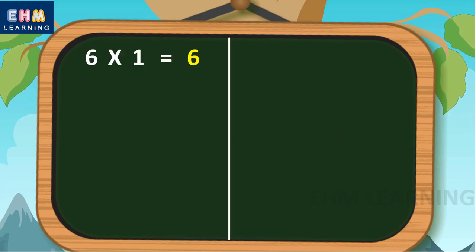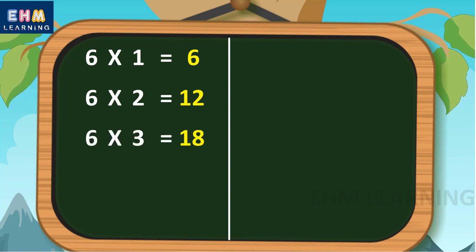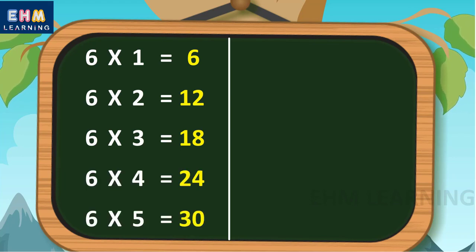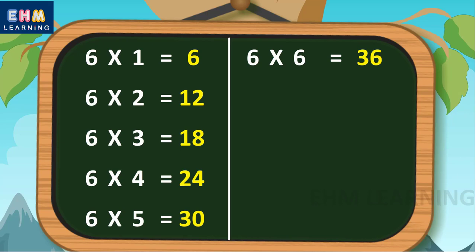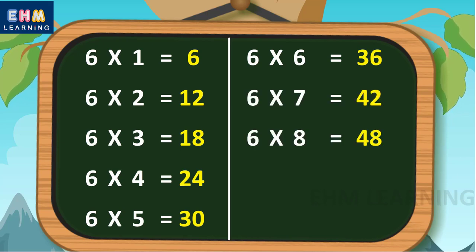Let's learn again. Six ones are six, six twos are twelve, six threes are eighteen, six fours are twenty-four, six fives are thirty, six sixes are thirty-six, six sevens are forty-two, six eights are forty-eight, six nines are fifty-four.